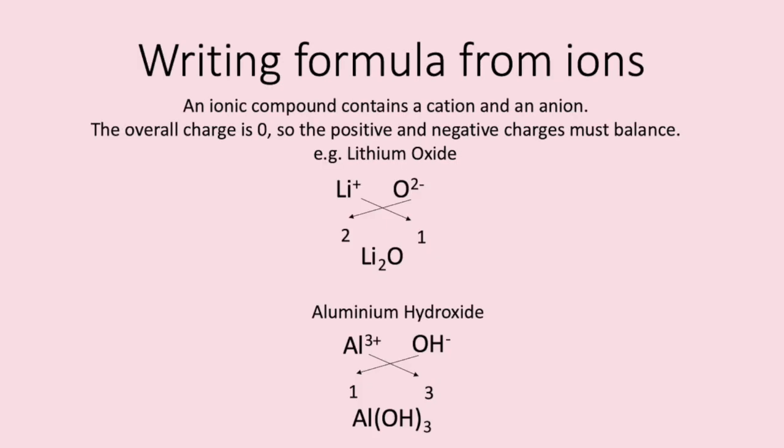We learned previously that a compound is two substances chemically combined. An ionic compound contains a cation which is a positive ion and an anion which is a negative ion. The overall charge of an ionic compound is zero so the positive and the negative charges must balance. If we take the first example lithium oxide, lithium has a one plus charge and oxygen has a two minus charge. We can find these on the periodic table.